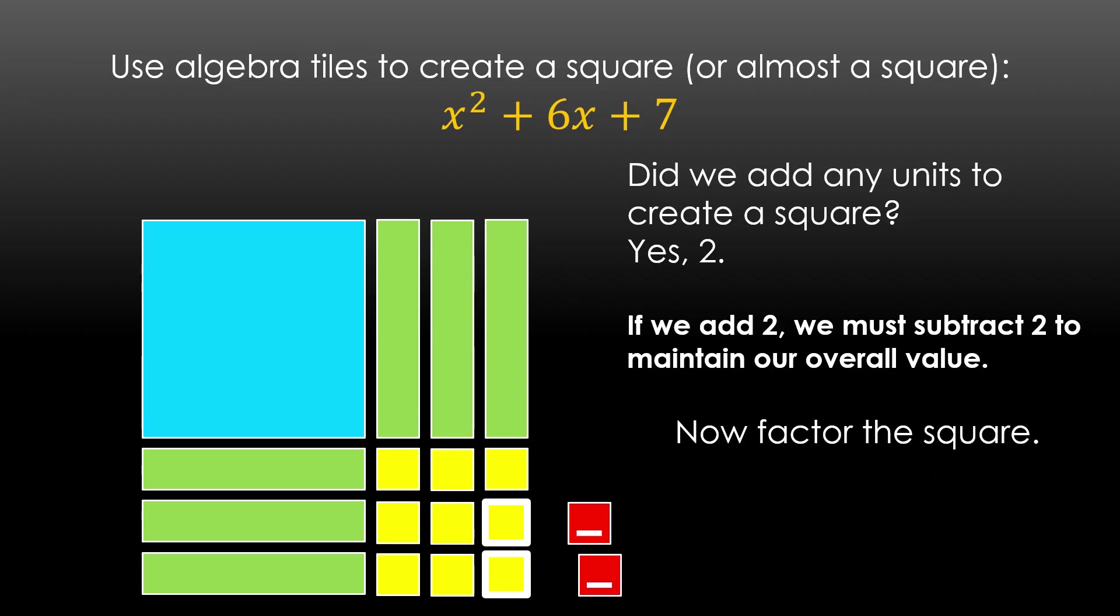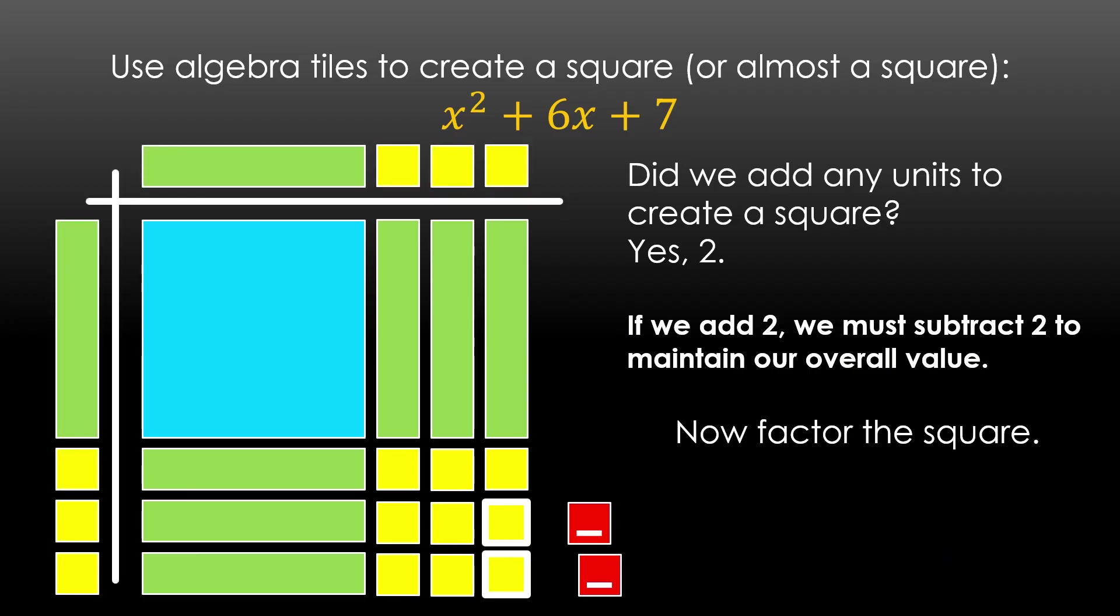That's important to keep in mind. I don't want my value to change. So I've got these two negatives kind of floating out here. All right, so now I'm going to factor this square like I just would normally do. It's now a perfect square, so I can factor it as x plus 3 squared. And then I take care of those two that are floating out there, minus 2. It's important to stop and think, why are we subtracting 2? Because we don't want to mess up this sign here. We added 2 to make our square, so we have 2 too many. That's why we're subtracting 2.